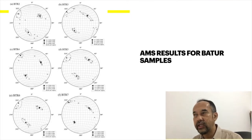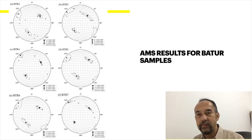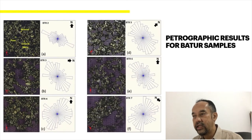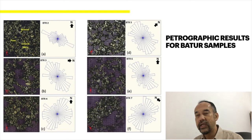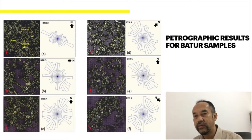This diagram shows the declination and inclination of each magnetic susceptibility axis for samples from the Batur volcanic complex. This picture shows the mineral orientation based on classical petrographic analysis, also for samples from Batur volcano.